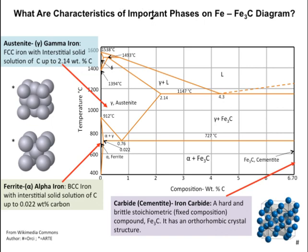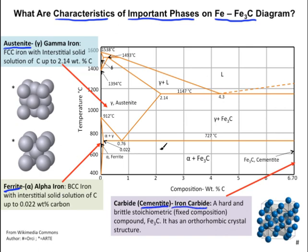Before we look at the different reactions occurring on the iron-iron carbide phase diagram, we need to describe the characteristics of important phases. I have chosen austenite, ferrite, and cementite — also known as iron carbide — as the important phases that I will discuss.